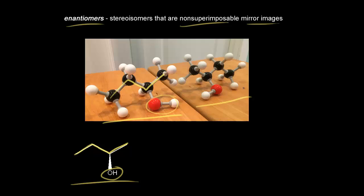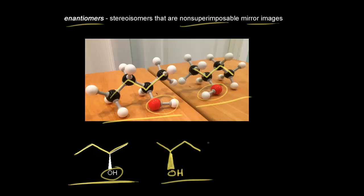So let's draw what we see. We see our carbon skeleton like this. There is our carbon skeleton, and our OH group is coming out at us in space, so we represent that with a wedge. So this drawing on the right is the enantiomer to the drawing on the left.